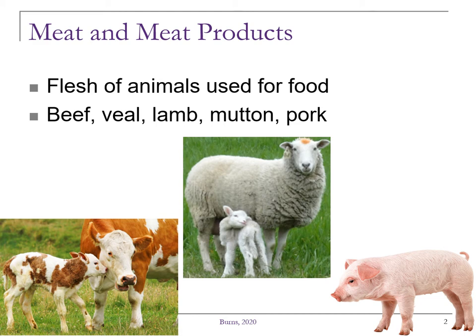Lamb is a young sheep, no more than 14 months old, whereas mutton is the meat from a mature sheep. Pork comes from pigs that are usually no more than a year old. However, higher quality pork is obtained from pigs between six and seven months.